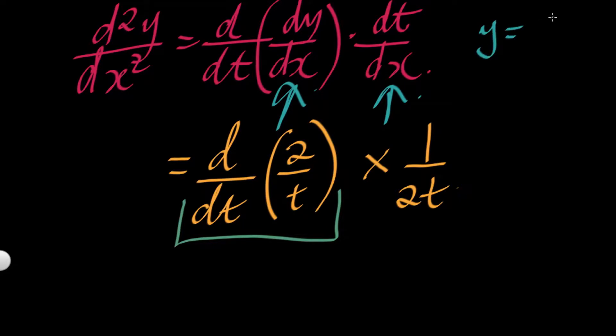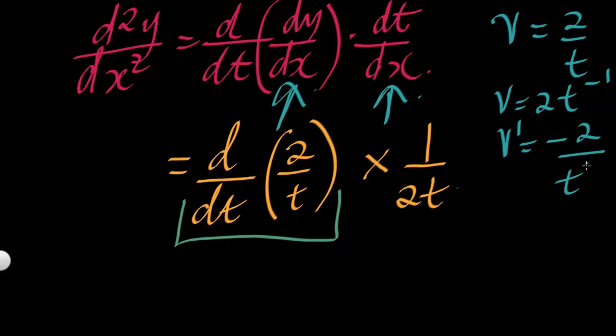Let me use v. V equals to 2 over t. This is like v is equal to 2t to the power minus 1. If we differentiate this, the derivative is minus 2 over t². That's the derivative. So in other words, if you differentiate 2 over t, the derivative is minus 2 over t².